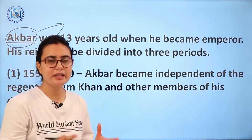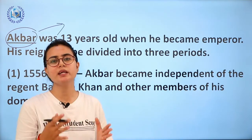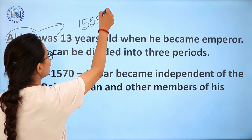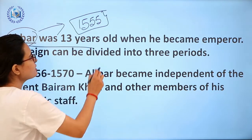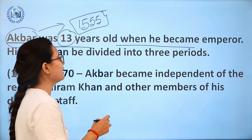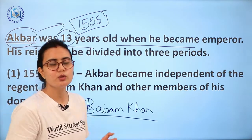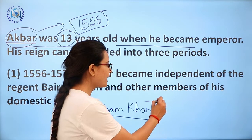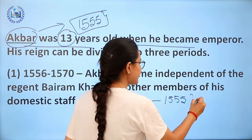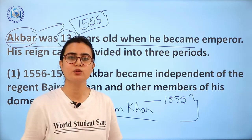Akbar was one of the greatest rulers of the Mughal Empire, because many administrative policies and reforms were introduced during his time. When Humayun died in 1556, Akbar was only 13 years old when he became emperor. He had the guidance of Bairam Khan, an important ally of Humayun, who helped guide him on how to rule.